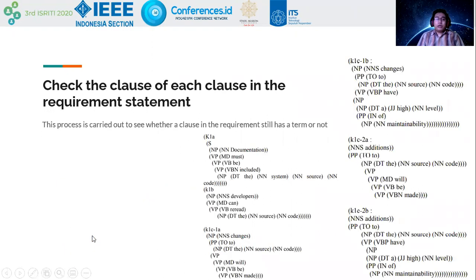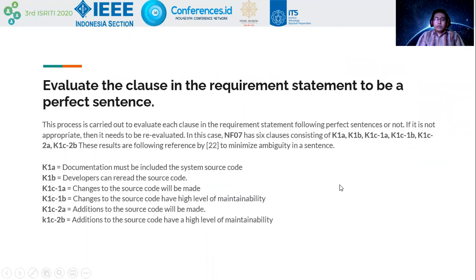Checking the clauses of each clause in the requirement statement is carried out to see whether the clauses still contain a term or not. Evaluating the clauses in the requirement statement to be perfect sentences is carried out to evaluate each clause by determining whether it follows a perfect sentence structure or not. If not appropriate, it needs to be re-evaluated. In this case, non-functional requirement 7 has six clauses.